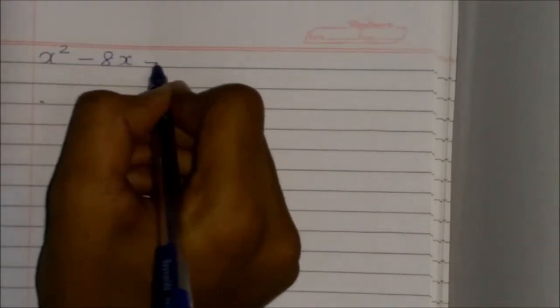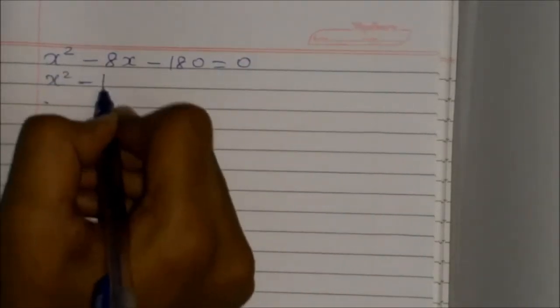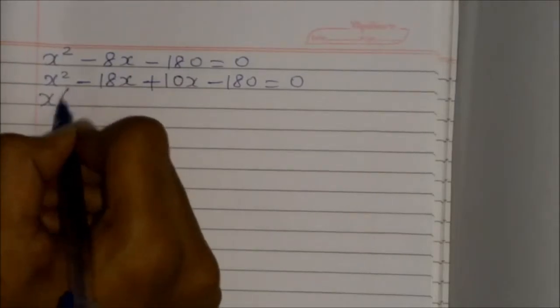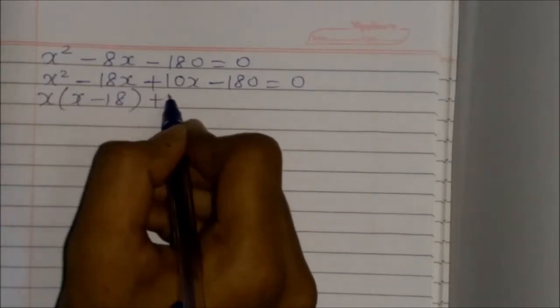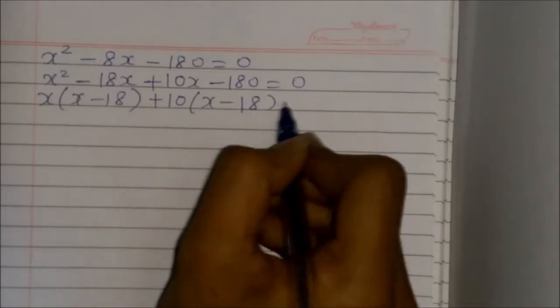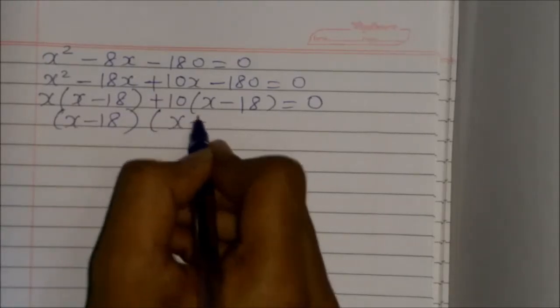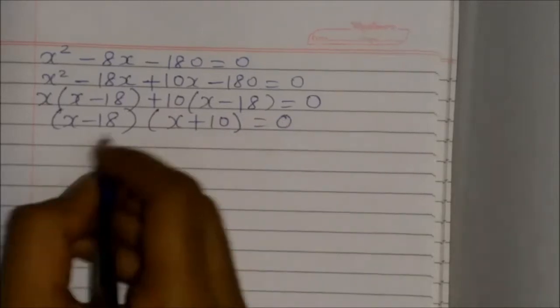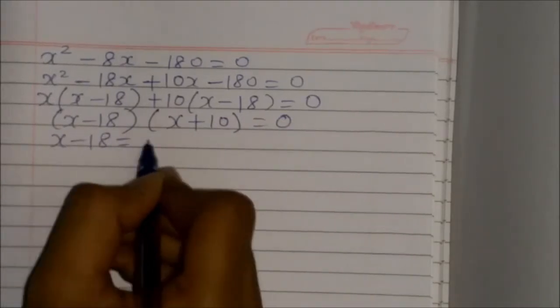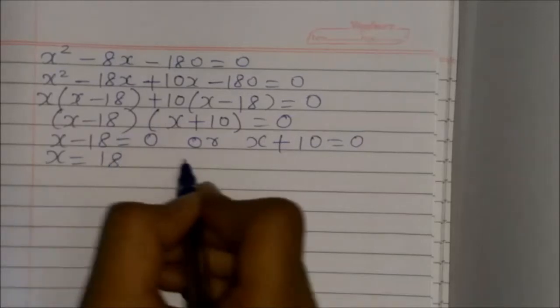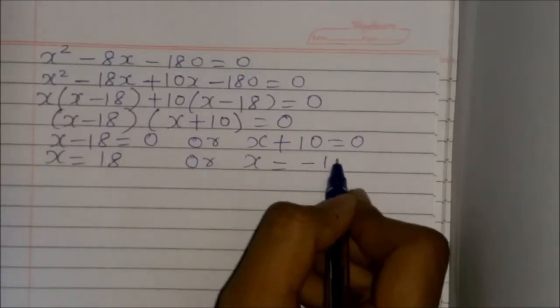The equation x² minus 8x minus 180 equals 0 is split as x² minus 18x plus 10x minus 180 equals 0. Taking x common from the first pair gives x(x minus 18), and taking 10 common from the second pair gives 10(x minus 18) equals 0. So x minus 18 equals 0 or x plus 10 equals 0.